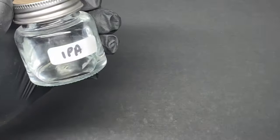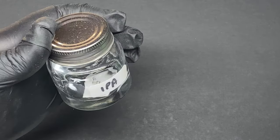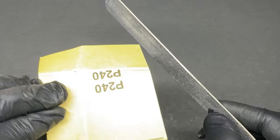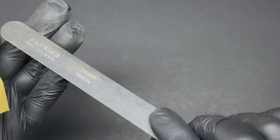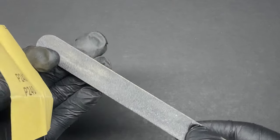The last few things you'll need is a separate jar of IPA or alcohol and some fine grit sandpaper. Anything around the two to three hundred grit paper will be okay, and a nail file or emery board is also handy to have. So let's give it a go.